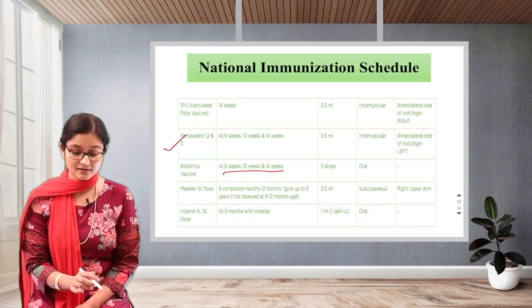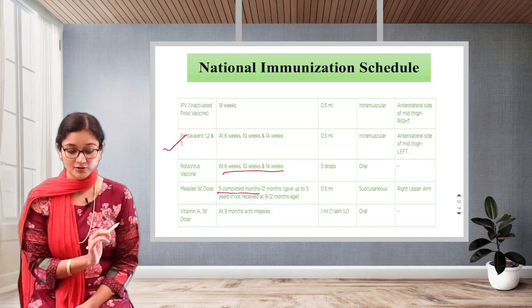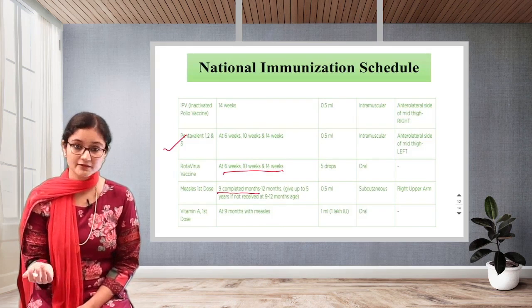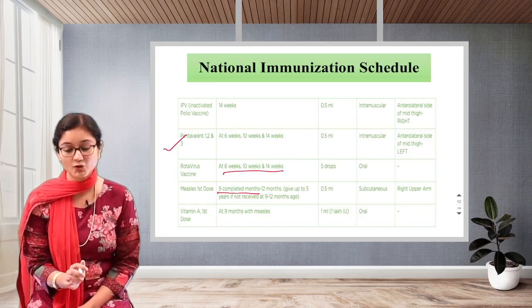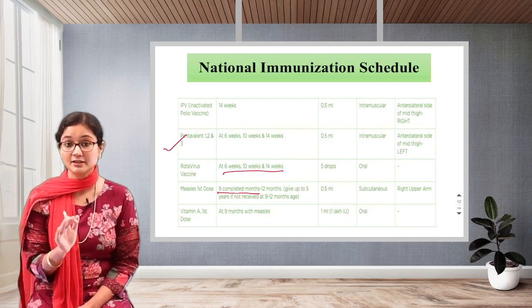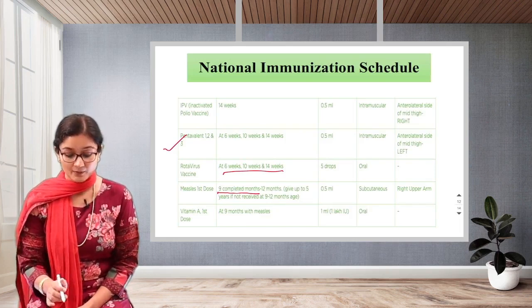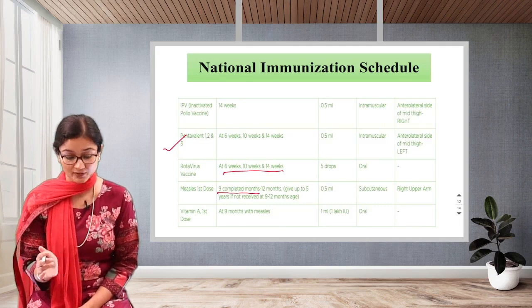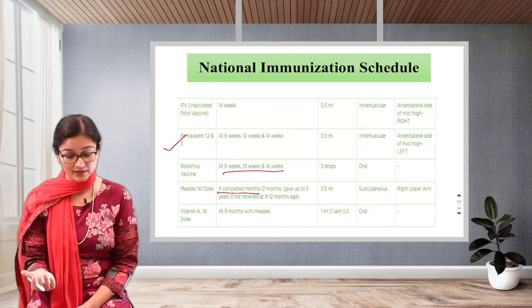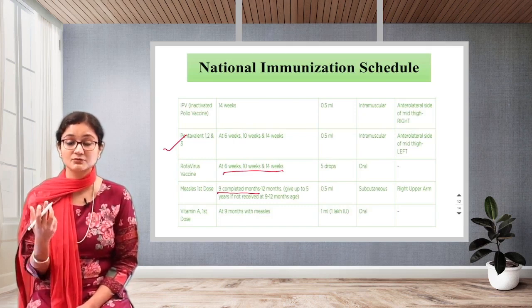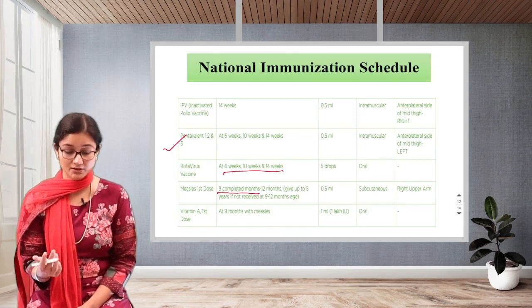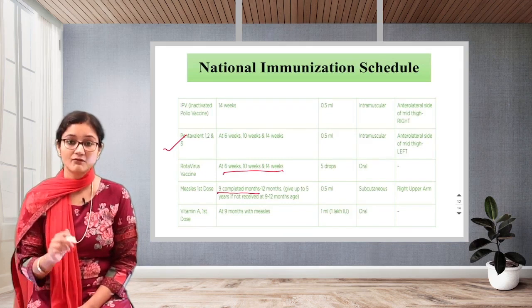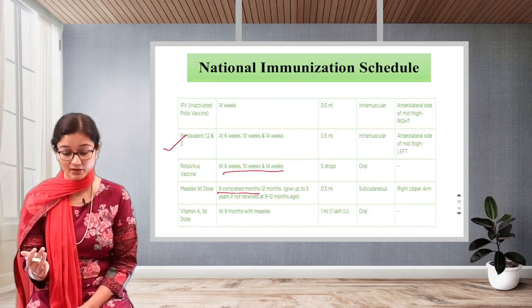Next we have measles. The first dose is given at 9 completed months — once the child has completed 9 months — and can be given from 9 to 12 months, or up to 5 years if not received. 0.5 ml subcutaneous in the right upper arm. Vitamin A is given orally to develop good vision and also plays a very important role in immunity. The first dose of vitamin A is given along with measles at the 9th month — 1 ml, which is 1 lakh international units.